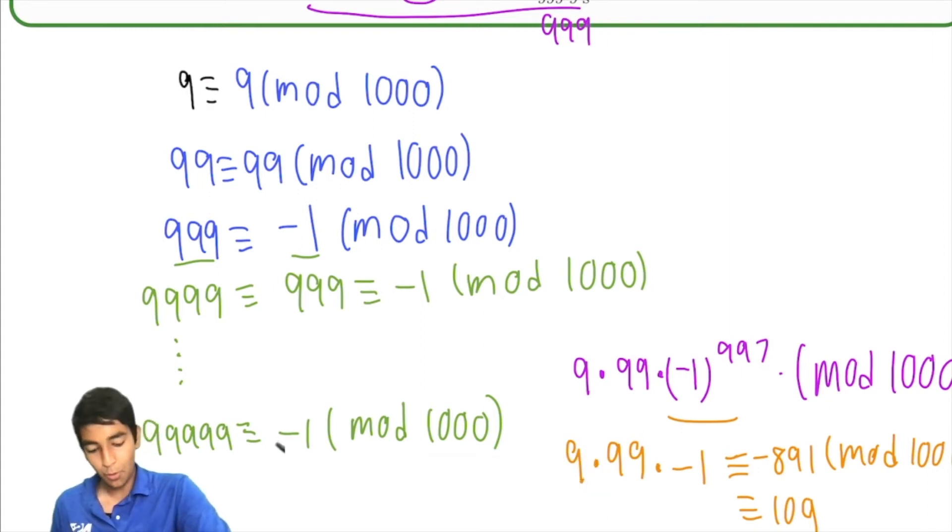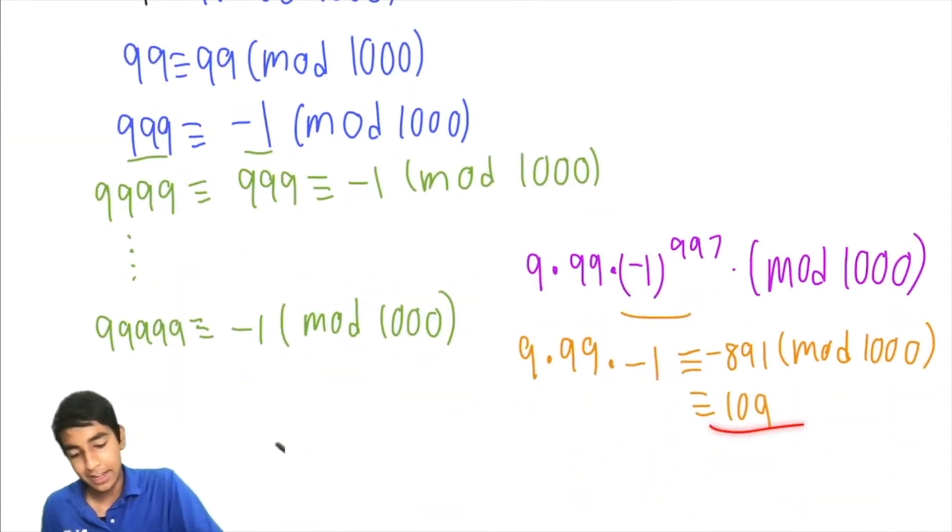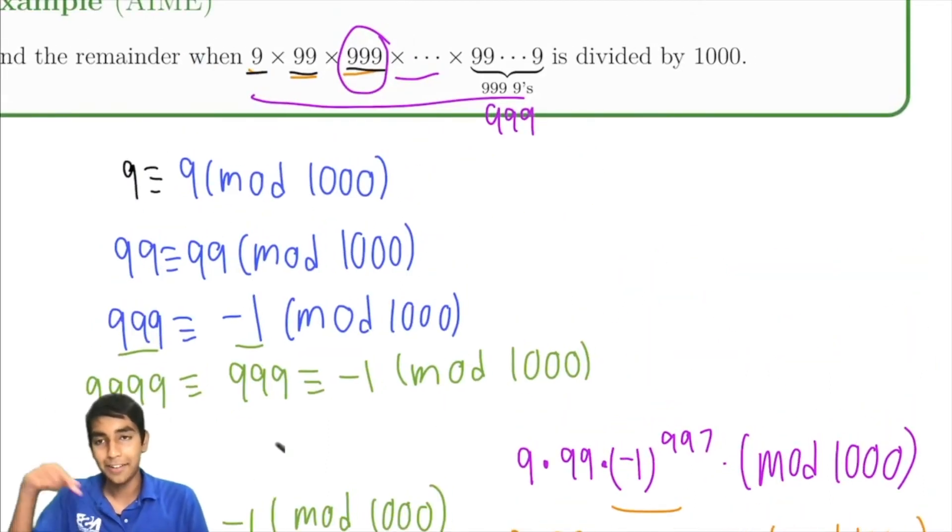Let's summarize what we did in this problem. First, what we did is we found 999 mod 1,000, and then we saw that all the remaining terms were negative 1 mod 1,000. So then we got this nice looking expression instead of this ugly looking expression, and we simplified it down pretty easily to get an answer of 109, which is the final answer for this problem right here.